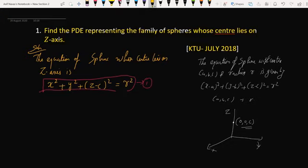Now we want to find the PDE. First we differentiate equation 1 with respect to x. You will get 2x plus 2(z - c)(∂z/∂x) = 0.